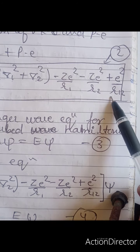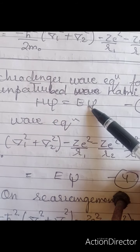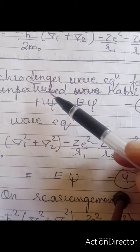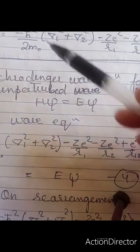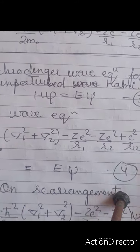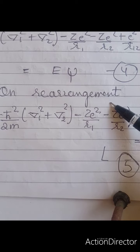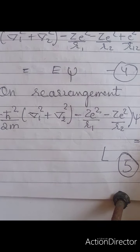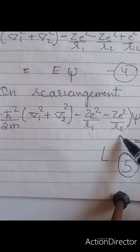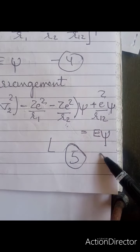We know the Schrödinger wave equation for the unperturbed Hamiltonian: H·ψ = E·ψ. We put the value of H into this equation and perform a rearrangement — taking this portion outside and keeping the rest — arriving at: H₀·ψ + (E²/R12)·ψ = E·ψ.